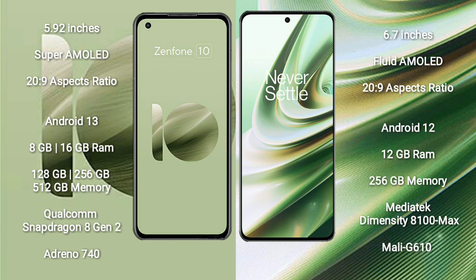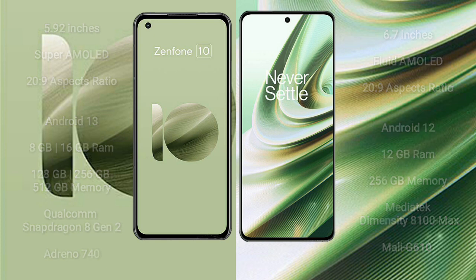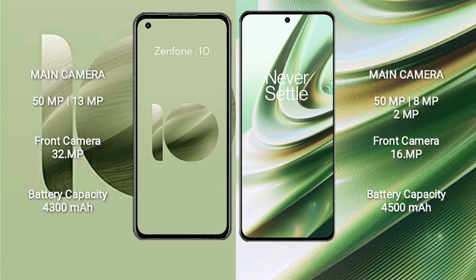The Asus Zenfone 10 features a Qualcomm Snapdragon 8 Gen 1 processor with an Adreno 740 GPU. The OnePlus 10R comes with 12GB RAM and 256GB internal storage, powered by a MediaTek Dimensity 8100 Max processor with a Mali-G610 GPU. The Asus Zenfone 10 has a rear dual-camera setup of 50MP plus 13MP and a 32MP front camera. The OnePlus 10R has a rear triple-camera setup of 50MP plus 8MP plus 2MP and a 16MP front camera.